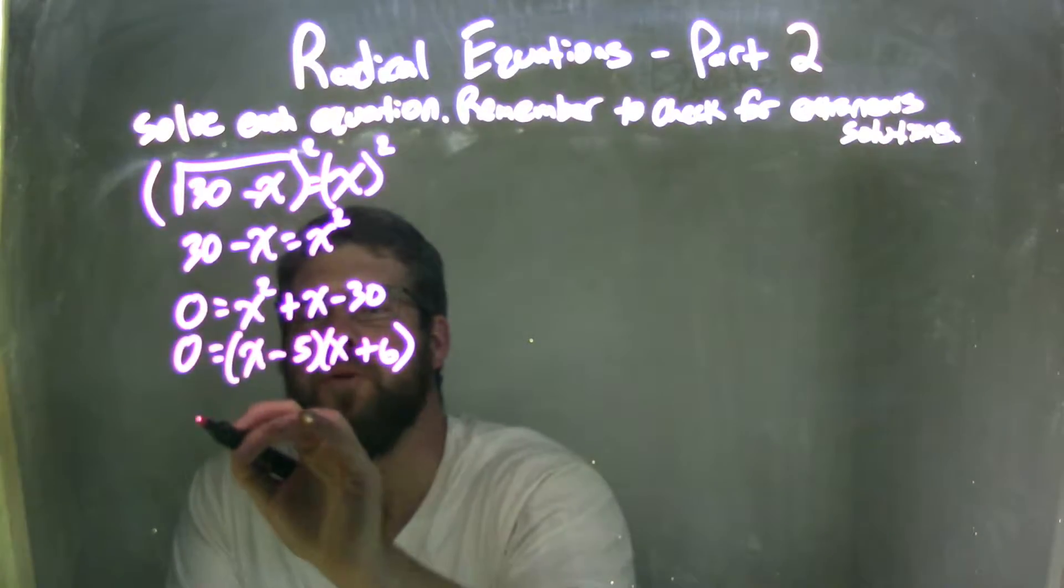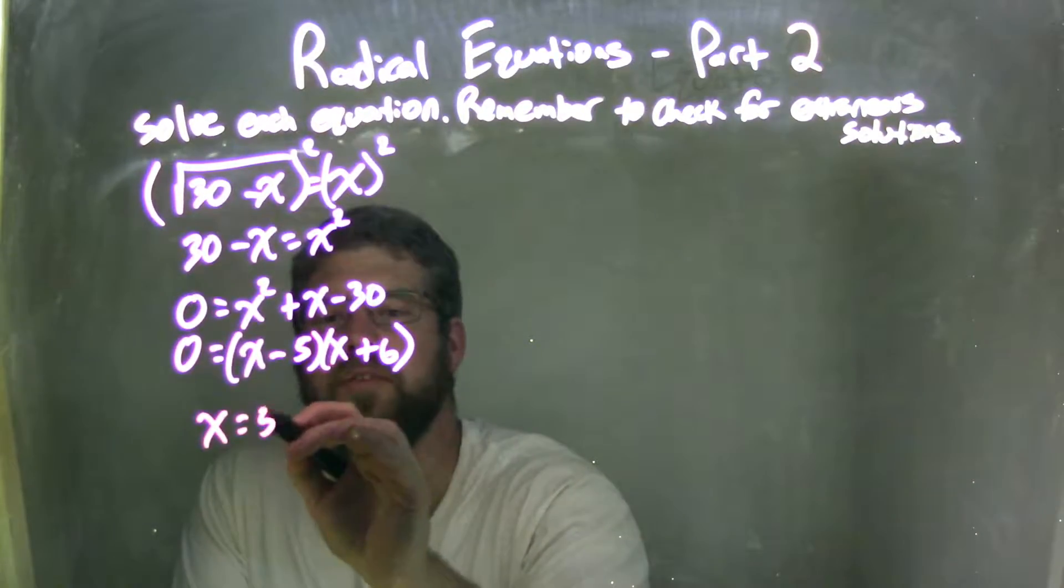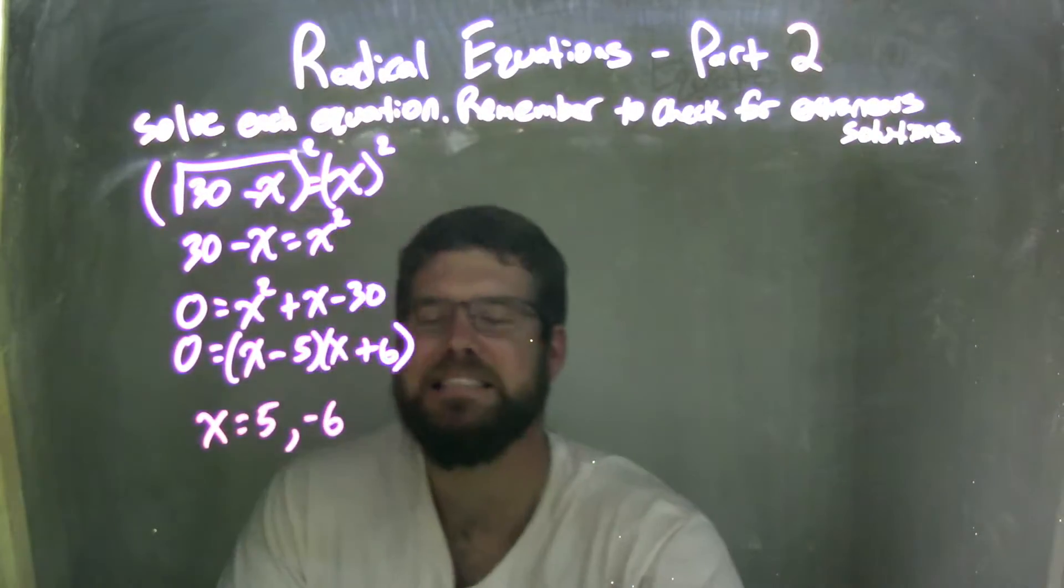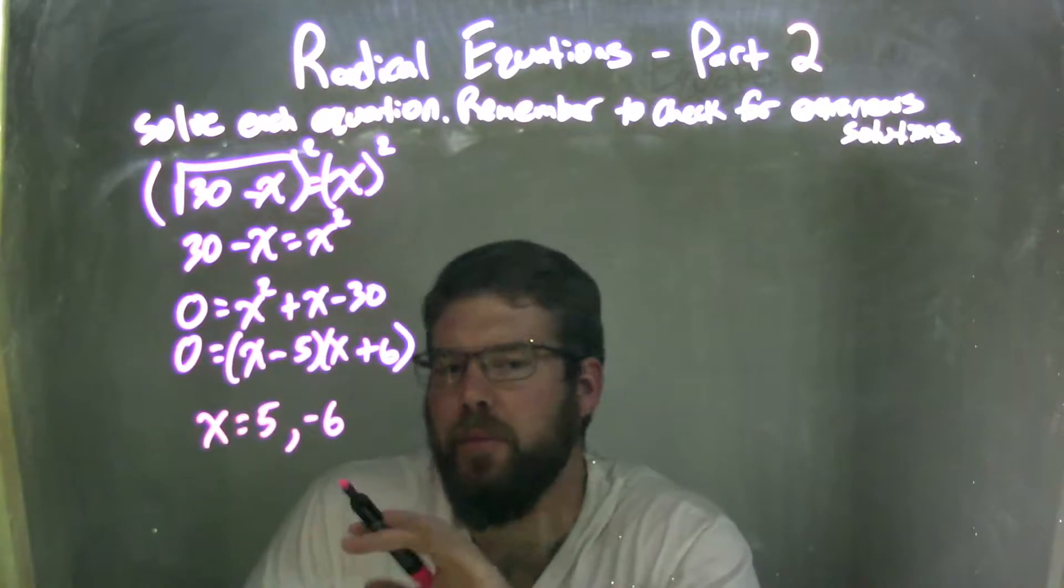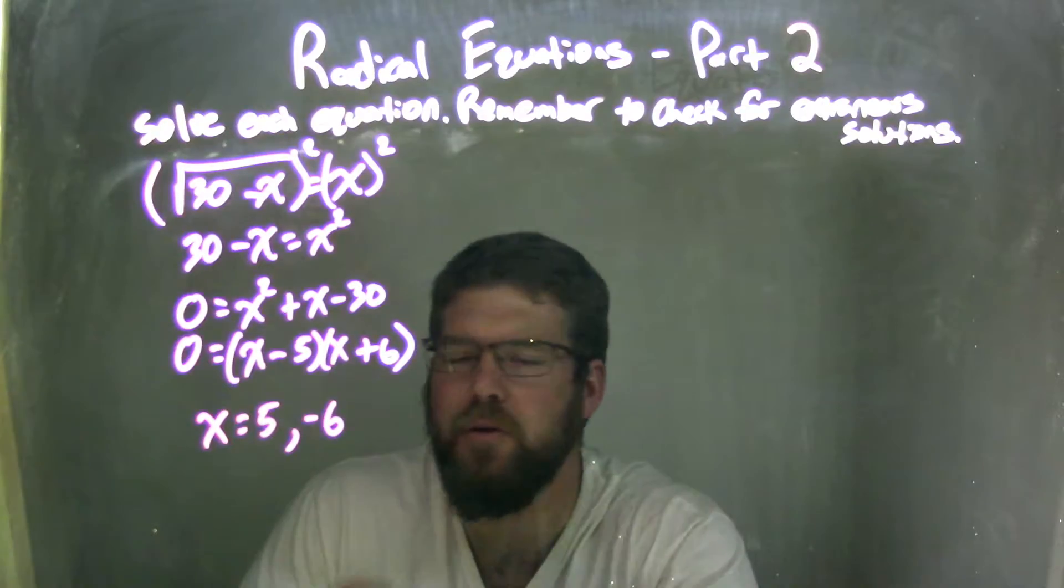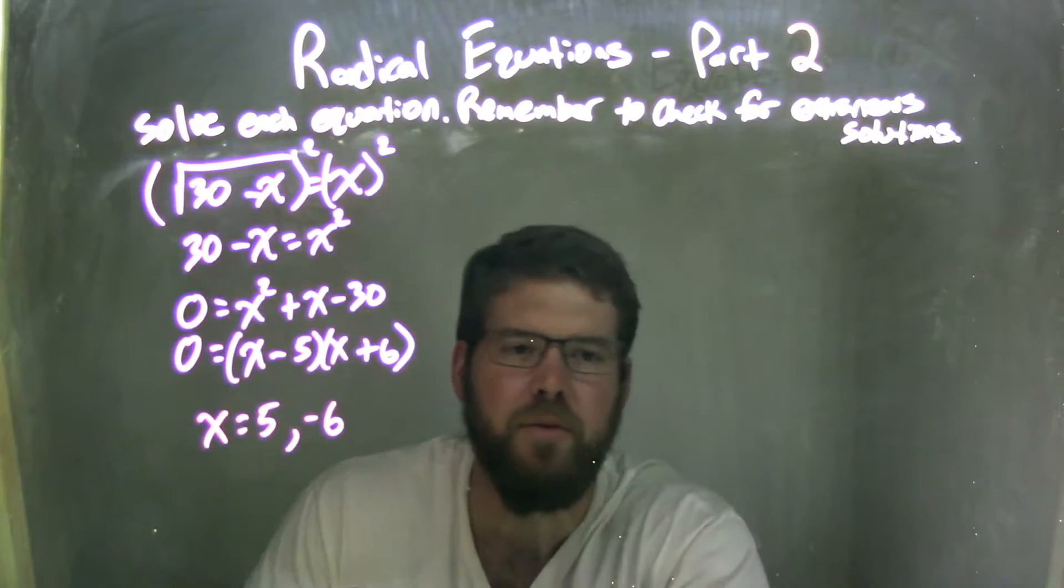So that leaves me with two answers, x equals positive 5 and negative 6. So if we set both parts of these, we factor it out, both parts equal to 0 and solve, we get x equals 5 and x equals negative 6.